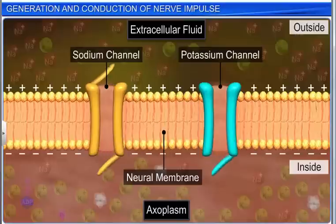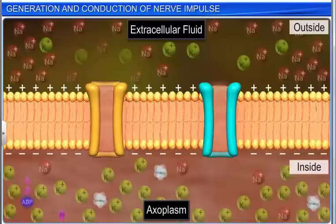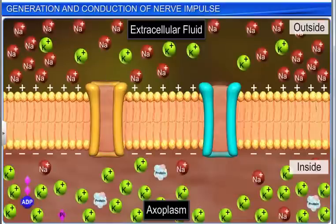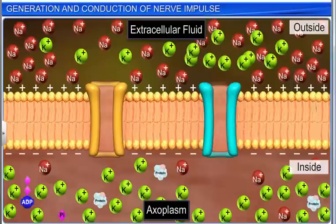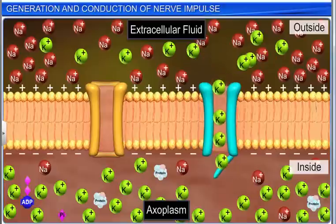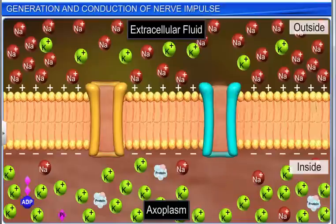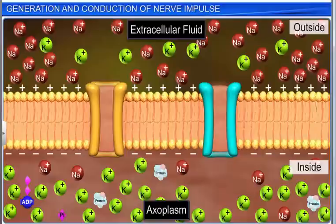These channels open or close according to the electric potential across the membrane. The ion channels of the resting membrane are differentially permeable to ions at different rates. It is more permeable to potassium ions, almost impermeable to sodium ions, and totally impermeable to the negatively charged proteins of the axoplasm.